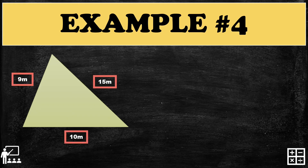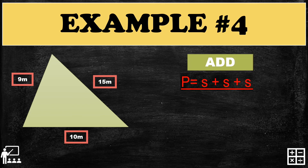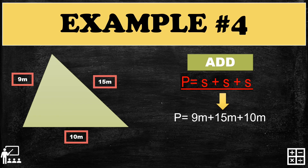Let's try another example. As you can see, this triangle has no equal sides because it is a scalene triangle. Using the formula P equals S plus S plus S, substitute the sides: 9 plus 15 plus 10. The perimeter of this scalene triangle is 34 meters.